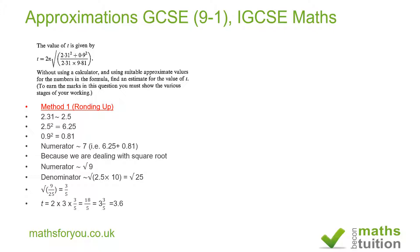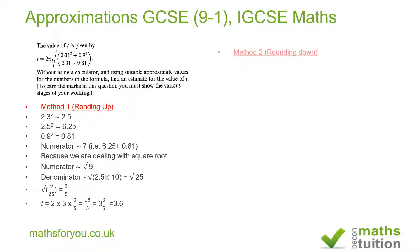Now 3 times 3 is 9, times 2 is 18, so we get 18 over 5. That becomes 3 and three-fifths, which is 3.6. So that's the answer for the first method — the 'writing up' method.